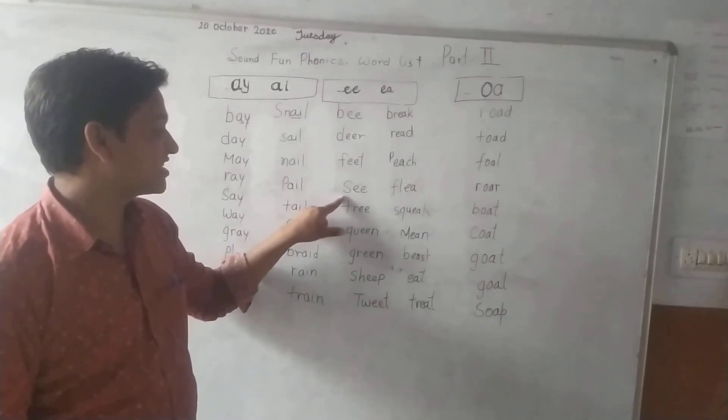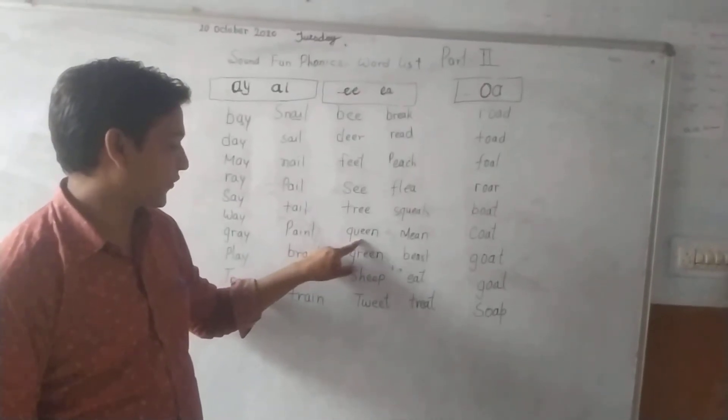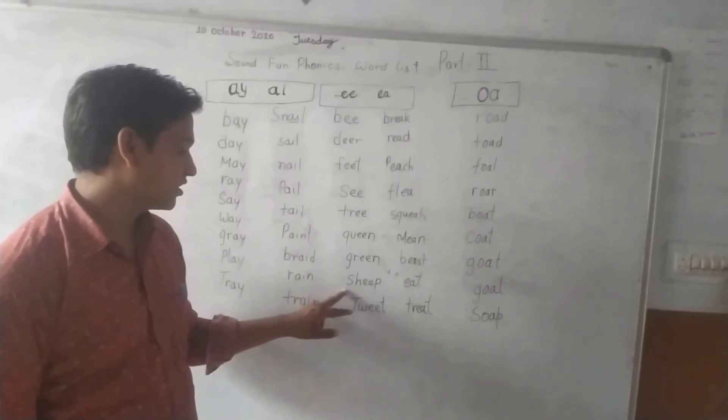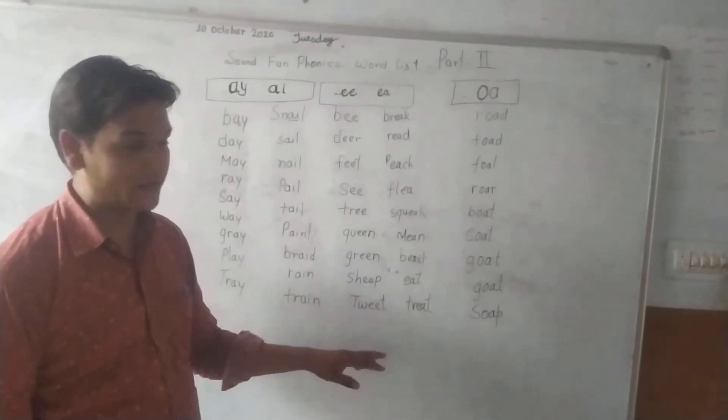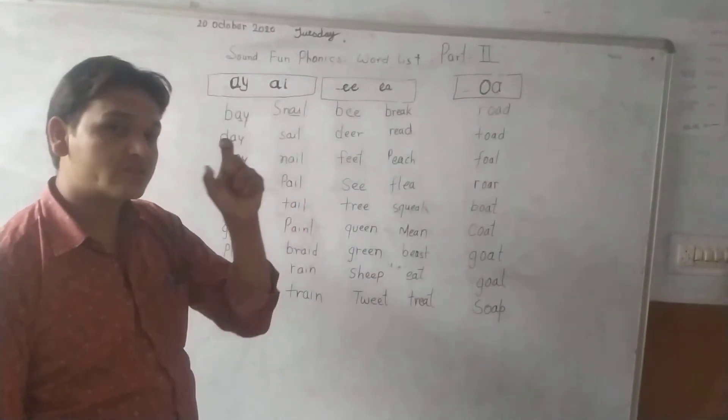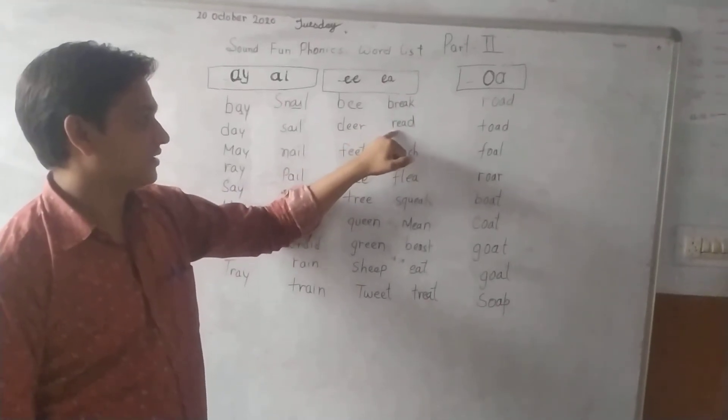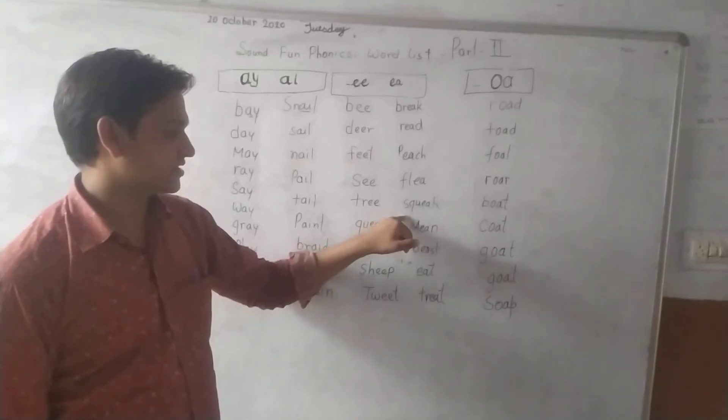Tree, Green, Sheet, Tweet - that's the sound of E. The short sound E: Break, Beat, Flee, Scrape.